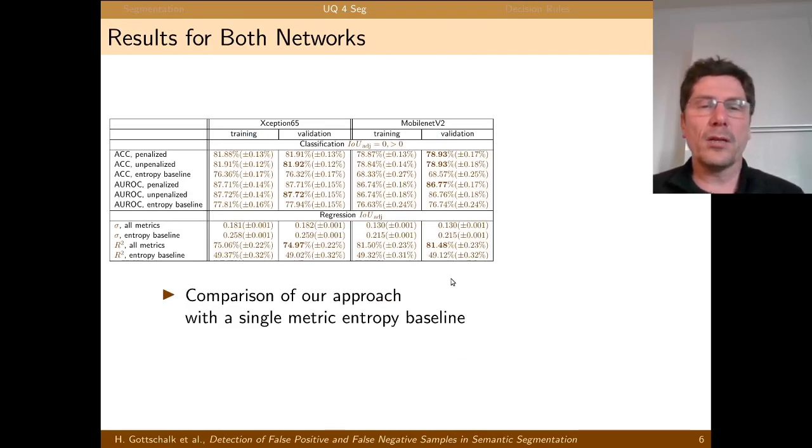And in doing so, we're getting an accuracy for the binary classification task of classifying IOU zero versus IOU non-zero. In other words, classifying whether the given predicted segment is a false positive which is up to 81% for the exception 65 and 78% for the mobile net v2, whereas guessing probabilities are 68% and 58% for the exception and the mobile net respectively. What you see here is the area under receiver operator curve. So that's pretty much in line with the accuracy values of the test data sets.